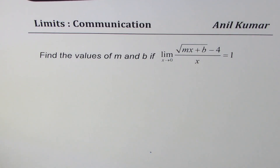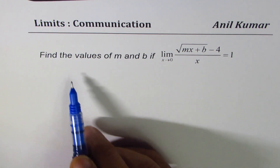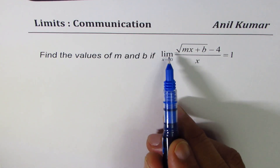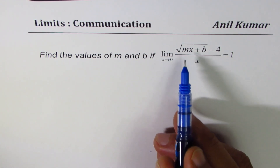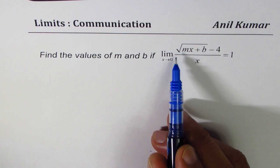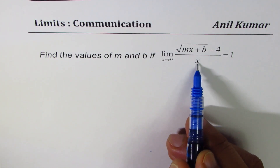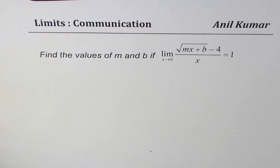I'm Anil Kumar sharing with you a communication question on limits. The question is: find the values of m and b if the limit as x approaches 0 of the function (square root of mx plus b, minus 4) divided by x is equal to 1. You can pause the video, answer the question, and then look into my suggestions.